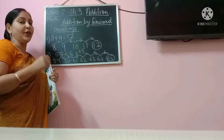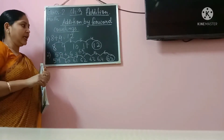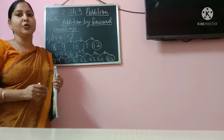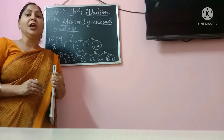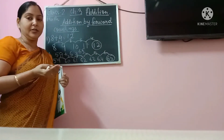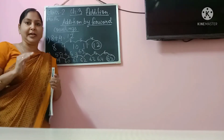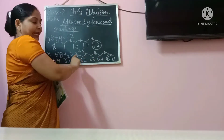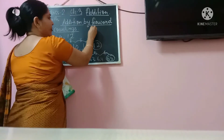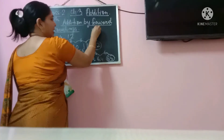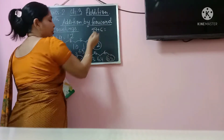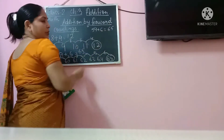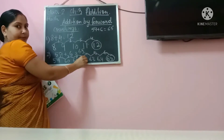So this way you are going to do forward counting. Now, many of you, when this kind of question is given to you in the exam, you try to write the direct answer. Don't write the direct answer. You please show the steps. So don't do like this — where 59 plus 6 is the question and you have written 65 directly. Don't do this. Just follow the steps.